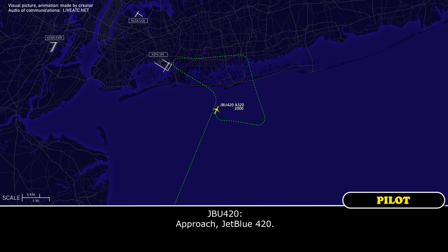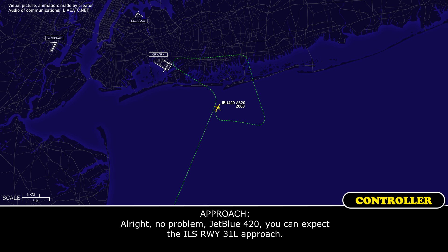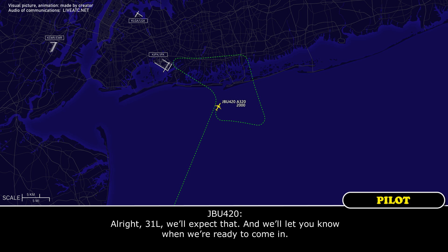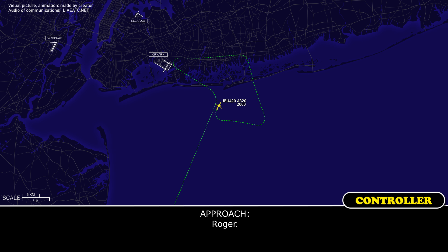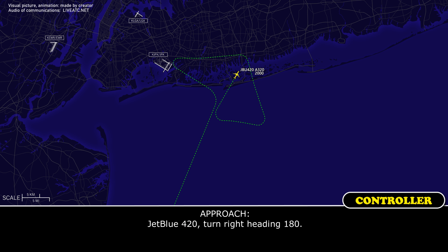Approach, JetBlue 420. Go ahead. For your planning purposes, once we get these checklists done, we are going to need 31 left for landing distance. Alright, no problem, JetBlue 420. You can expect the ILS for runway 31 left. Alright, 31 left, we'll expect that. We'll let you know when we're ready to come in. JetBlue 420, turn right heading 180. Right turn 180, JetBlue 420.